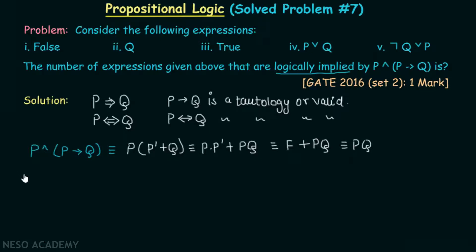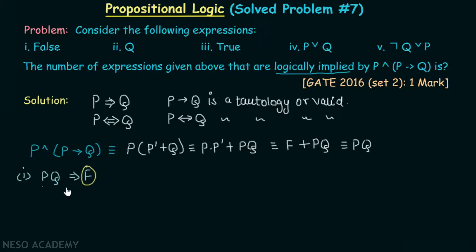Let's consider the first expression: does pq logically imply false? If pq logically implies false, then pq implies false must be a tautology. If we take p true and q true, this whole expression becomes true, and true implies false is false. Hence, expression one is not logically implied by p AND (p implies q).